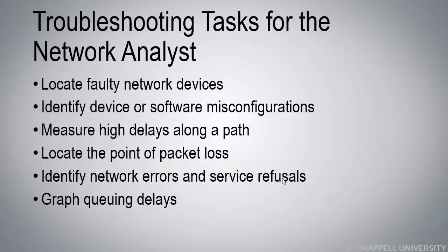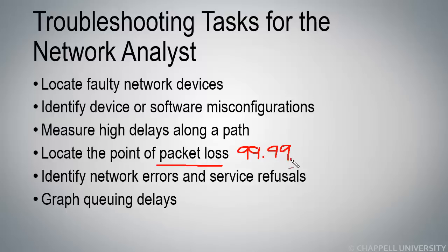Going back to our list, we also want to be able to locate the point of packet loss. As a hint, 99.999% of the time packet loss occurs at an infrastructure device — you're typically looking for a switch, router, firewall, or NAT device that is dropping packets.